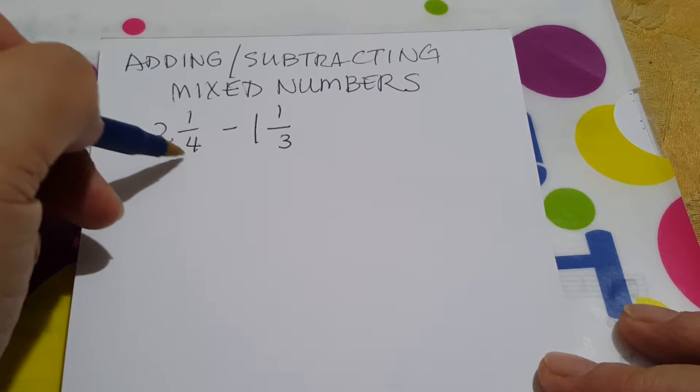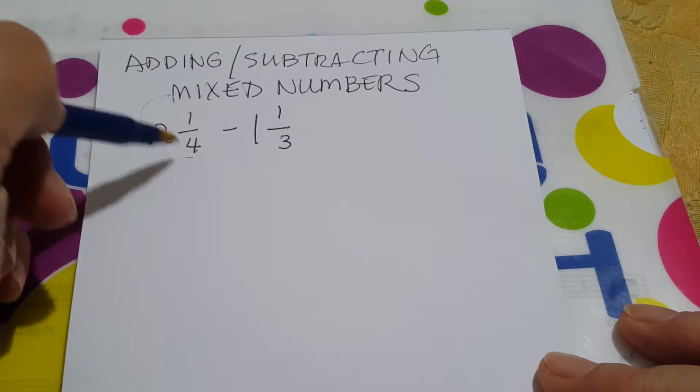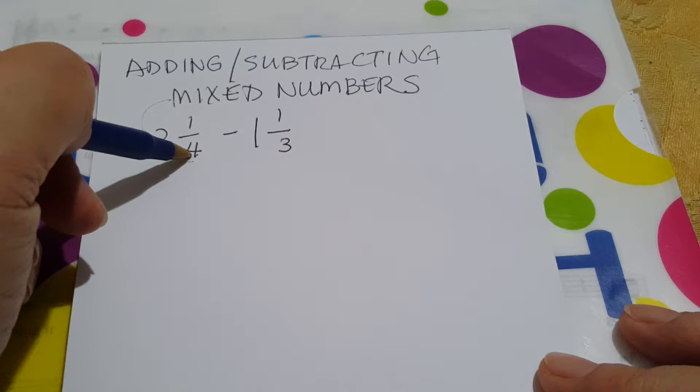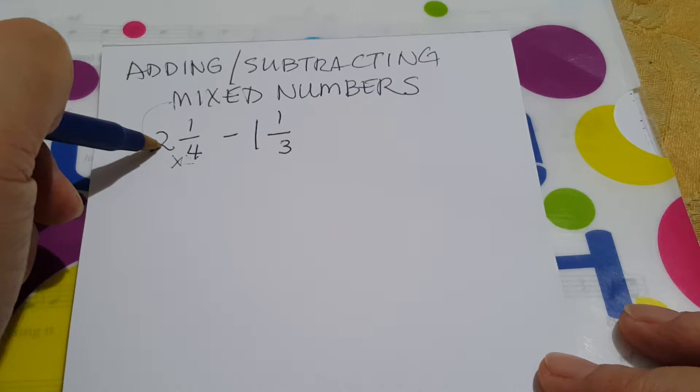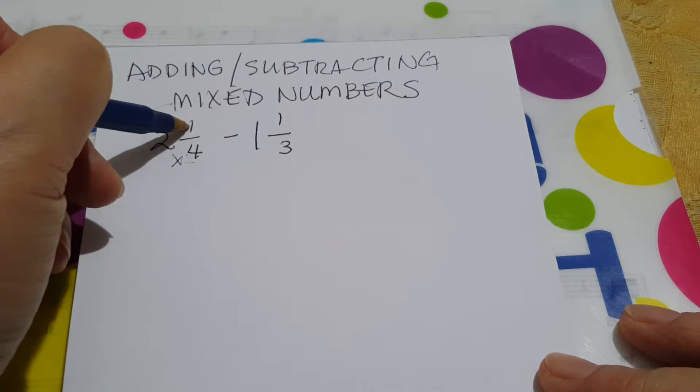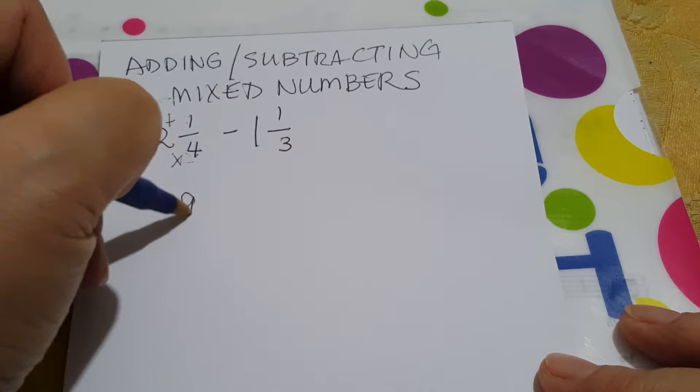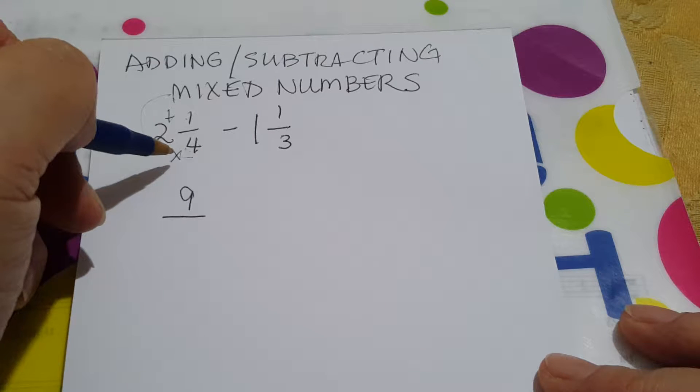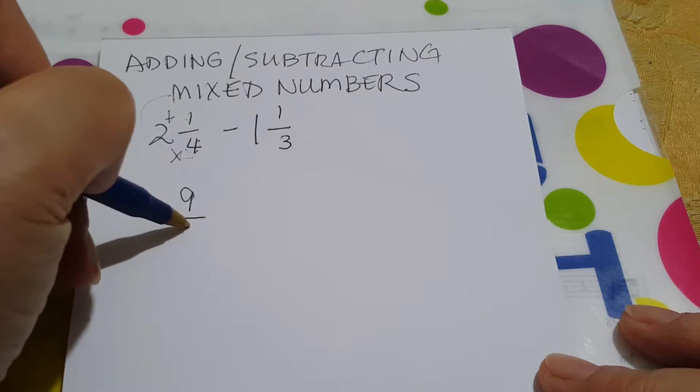There you go. We're now focused. So again, let's convert this. Remember how to do it. Denominator times the whole number is 8 plus the numerator is 9. And what will be the denominator? As we said, the denominator always remains the same.